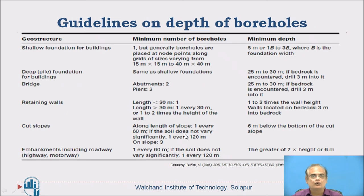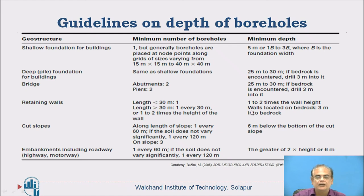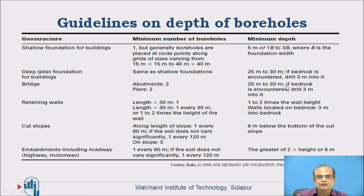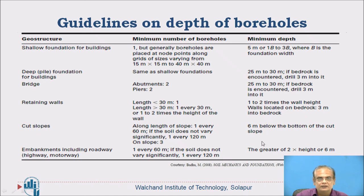There are also IS code guidelines on the depth of boreholes. For shallow foundations for buildings, the minimum depth equals the width or breadth of the foundation, or 3 times the breadth of foundation, or 5 meters. For deep foundations like pile foundations, 25 to 30 meters depth is required. For retaining walls, 1 to 2 times the wall height. These depth specifications must be followed while taking boreholes.